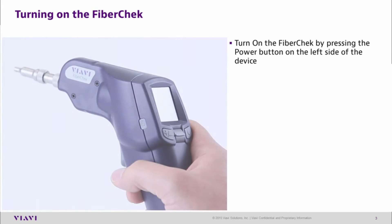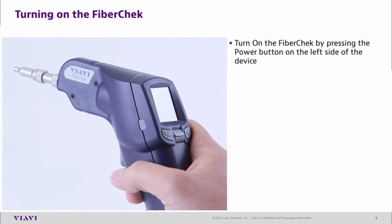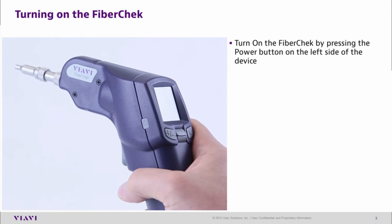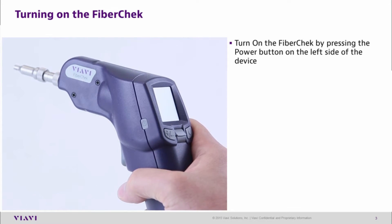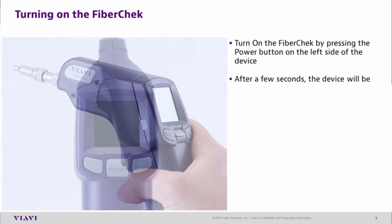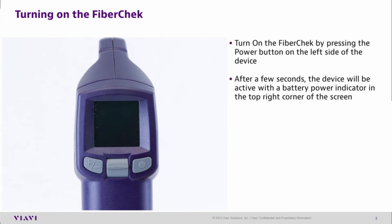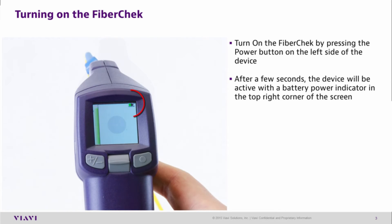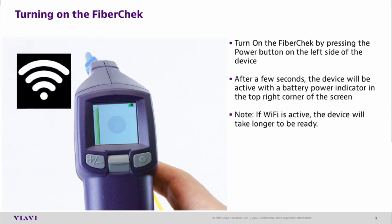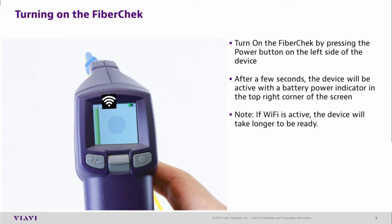The FiberCheck Probe can be turned on by pressing the power button on the left hand side of the device. After a brief period the device will be active and the battery power indicator will appear in the top right corner of the screen. If WiFi is active, the probe will take longer to get ready in order to connect to the remote device.